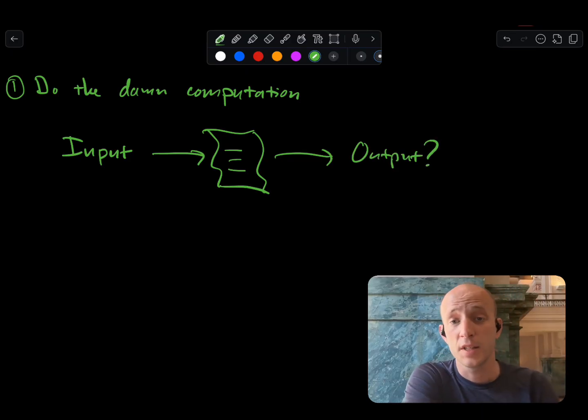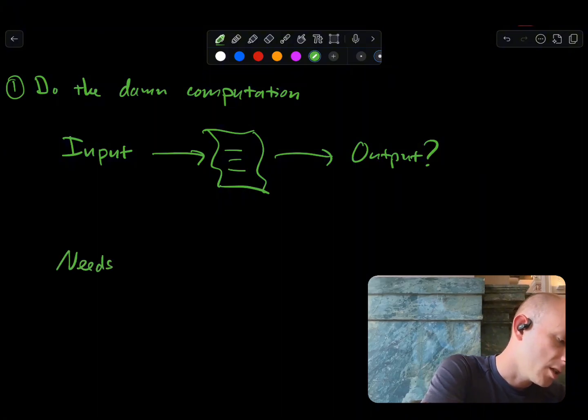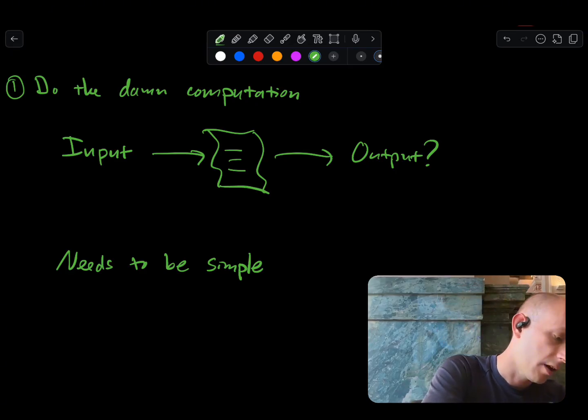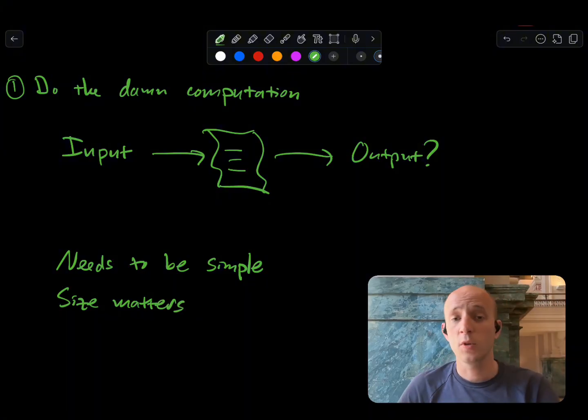But there's a few downsides to this approach, one of which is the computation needs to be dead simple. If it's not, the script can't support it or it gets way too large. The second is that size matters. Because we need to include both the input and the script on-chain, if the input's large, the transaction's large. And if the computation's complicated, the script is large. We can really quickly hit limitations and get expensive transactions.